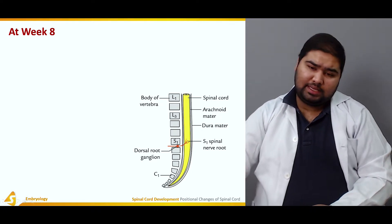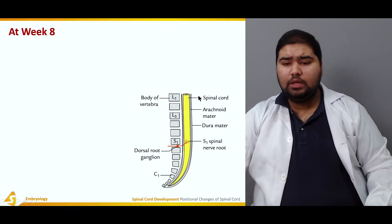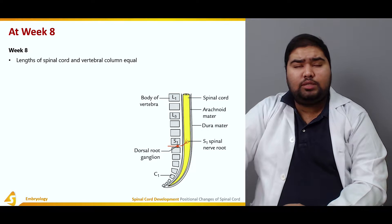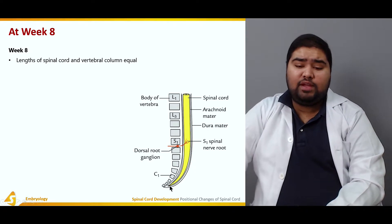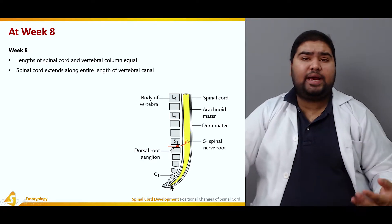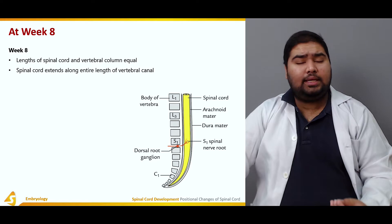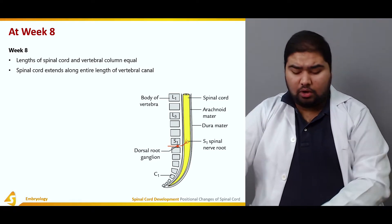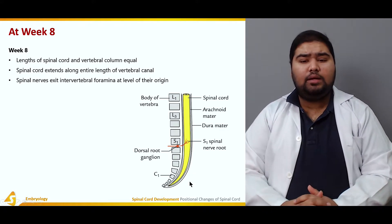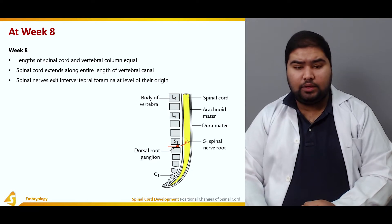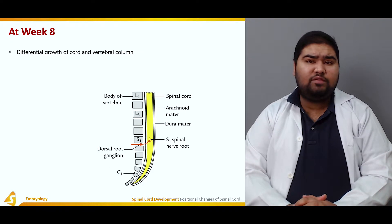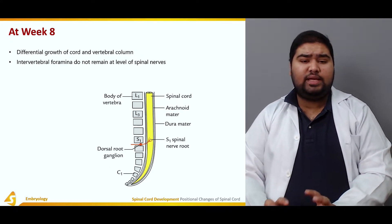At eight weeks of development — this figure shows the spinal cord in yellow — the length of the spinal cord and the vertebral column is equal. Here you can see the length is almost equal. The spinal cord extends through the entire length of the vertebral column, and the spinal nerves exit the intervertebral foramina at the level of their origin.